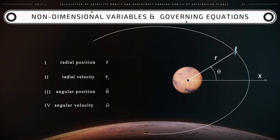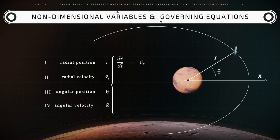Based on these four variables, the four non-dimensional equations to calculate the motion of a spacecraft around Mars are the following ones. d r̃/dt̃ equals vr̃. d vr̃/dt̃ equals r̃ ω̃² minus gm̃ over r̃². d θ̃/dt̃ equals ω̃. And d ω̃/dt̃ equals negative 2 vr̃ ω̃ over r̃.